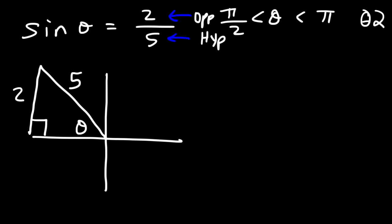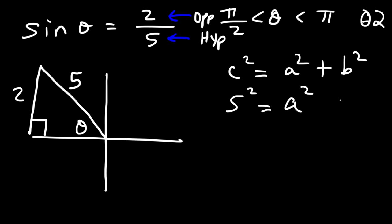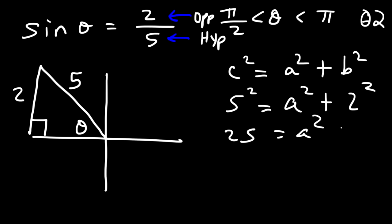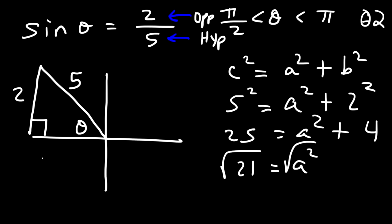Since this isn't a special right triangle, we use the Pythagorean theorem: C² = A² + B². With C = 5 and B = 2, we get A² = 25 − 4 = 21. So the missing side is √21.